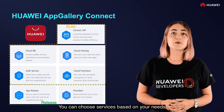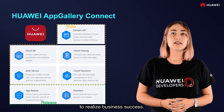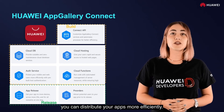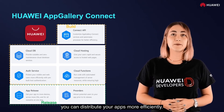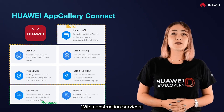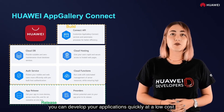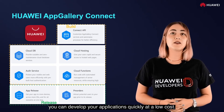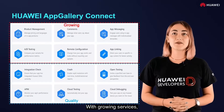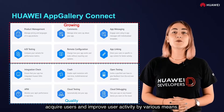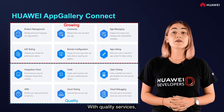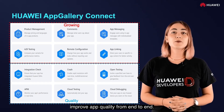You can choose services based on your needs and achieve business success. With release services, you can distribute your apps more efficiently. With construction services, you can develop your application's quality and reduce cost. With growing services, acquire users and improve user activity by various means. With quality services, improve app quality from end to end.